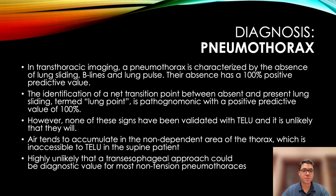The absence of these three elements has a 100% positive predictive value for a pneumothorax. The identification of a net transition point between absent and present lung sliding, termed lung point, is pathognomonic with a positive predictive value of 100%. However, none of these signs have been validated with transesophageal lung ultrasonography, and it is unlikely that they will. In fact, air tends to accumulate in the non-dependent area of the thorax, which is inaccessible to transesophageal lung ultrasound in the supine patient. It is therefore highly unlikely that a transesophageal approach could be of diagnostic value for most non-tension pneumothoraces.